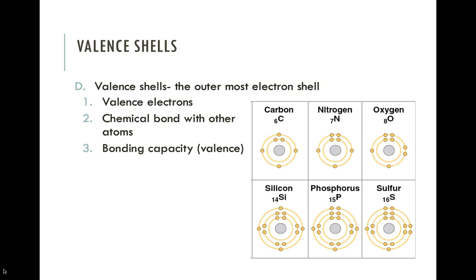We already talked about nitrogen — it has three valence electrons that are going to form a bond. Oxygen has two. Oxygen, nitrogen, and carbon are often bonded with hydrogen. If you look at silicon, phosphorus, and sulfur, you can see a variety of different numbers of unpaired electrons, this time in the third electron shell.